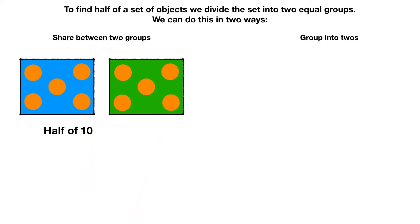Now we count how many circles are in one box: one, two, three, four, five. We have five in the blue box, so half of ten is five.